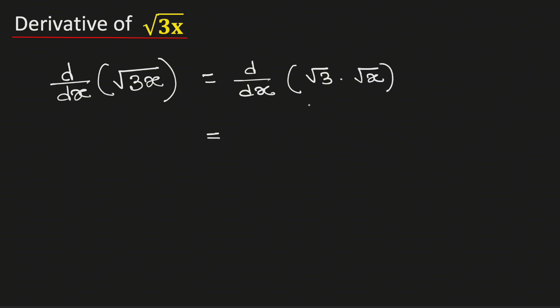Now see that root 3 is a constant, so we can write it outside. So it is equal to root 3 times the derivative of square root of x with respect to x.